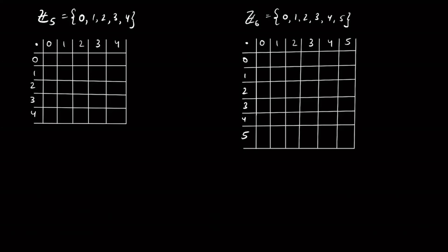Now let's analyze the structure of Z mod n more deeply by looking at multiplication tables for Z mod 5 and Z mod 6. For Z mod 5: zero times any integer is zero, so the first row and column are all zeros. Since 1 times any integer is that same integer, the second row is 1, 2, 3, 4.